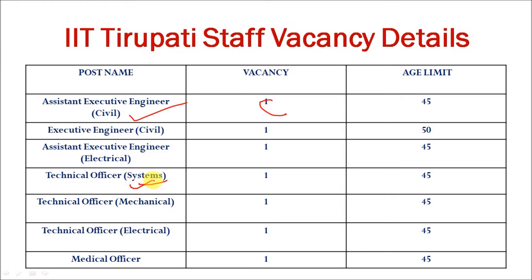Moving to Technical Officer in Systems: vacancy is one, maximum age limit is 45. This post is for CSC or IT. Minimum qualification is B.E./B.Tech with 60 percent marks and three years IT experience. Similar posts exist in Mechanical as well.